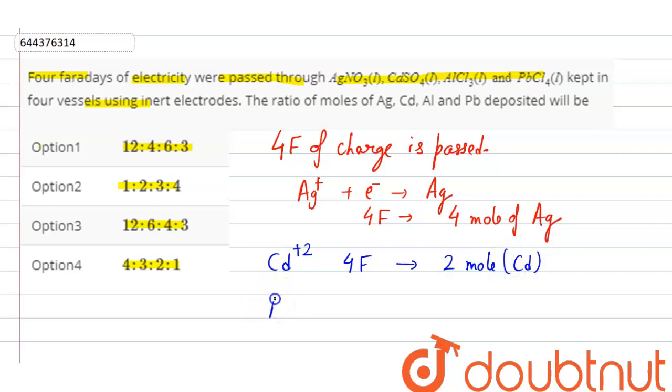Now the third is Aluminium. Aluminium will require 3 Faraday charge, 3 moles of electrons to get deposited. So by 4 Faraday charge, the moles deposited will be 4 by 3 moles of Aluminium.